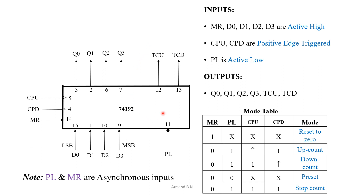The simplified realization of 74192 is presented here, showing the pin details, inputs, and outputs. This is the mode table we need to understand to work with the 74192. The first entry: if master reset is equal to 1, all others are don't care and the output is set to 0. Then if master reset is 0 and parallel load is 1, with the up count clock connected to the clock input and down count clock connected to VCC, normal sequential up count operation is performed.